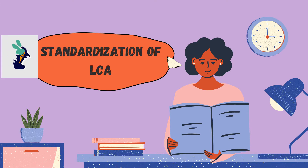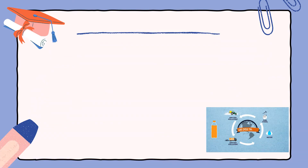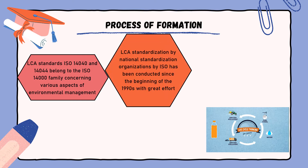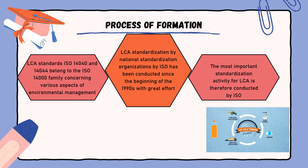Second, we will discuss the standardization of LCA. Process of formation: LCA standards ISO 14040 and 14044 belong to the ISO 14000 family concerning various aspects of environmental management. All nations that are members of TC 207 through their standardization organizations participate and international standards are developed. Generally this process takes several years. LCA standardization by ISO has been conducted since the beginning of the 1990s. This was difficult to achieve because individual phases of LCA, in particular impact assessment and interpretation, were still under technical-scientific development. The most important standardization activity for LCA is therefore conducted by ISO.